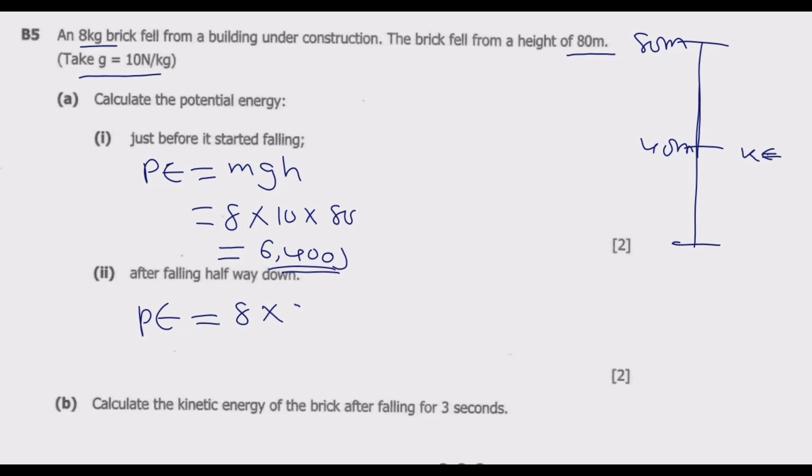To find the potential energy at halfway, mass is still 8 kg multiplied by gravity which is 10, multiplied by the height now 40. When we multiply this we get 3,200 joules as the potential energy. Alternatively you could have divided 6,400 by 2 to get 3,200.